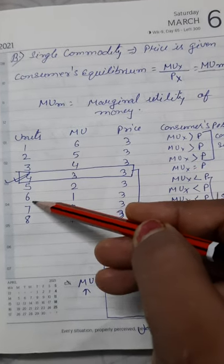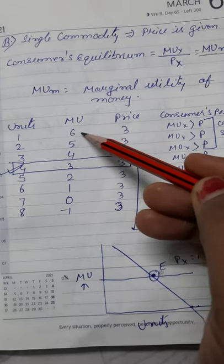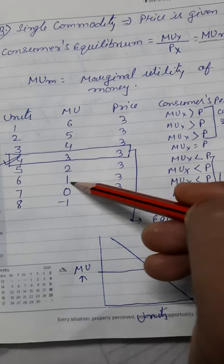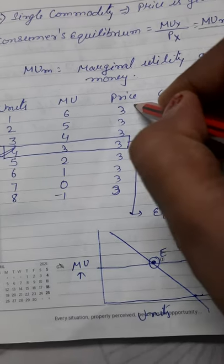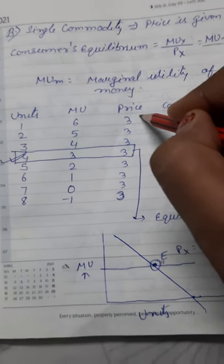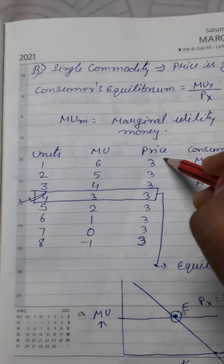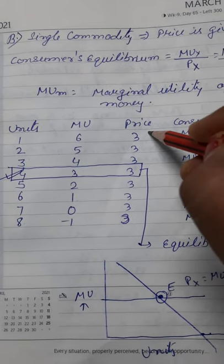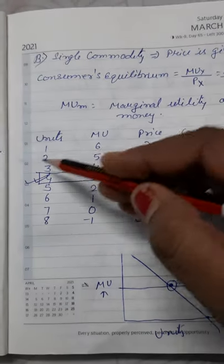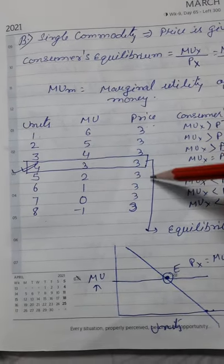Now, the units are 1, 2, 3, 4, 5, 6, 7, 8. Marginal utility is 6, 5, 4, 3, 2, 1, 0, minus 1. But the price of the product is 3. That is constant. Price of the product is not changing. It will be 3 for all the units.